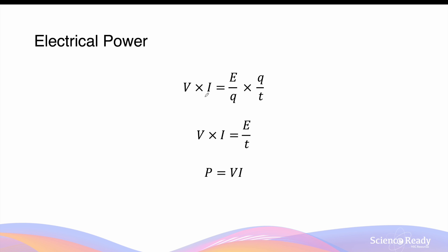Now, if we multiply voltage and current together, we'll multiply E over Q by Q over T. This will allow us to cancel charge in the denominator and numerator respectively. So the product of voltage and current gives us energy divided by time, that is electrical energy divided by time.